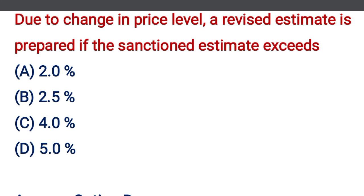Due to change in the price level, the revised estimate is prepared if the sanctioned estimate exceeds — option A: 2%, option B: 2.5%, option C: 4%, option D: 5%. The correct answer is option D, 5%.